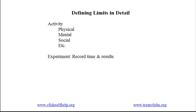Giving yourself a rating, as described in the last video, provides you with an overall sense of your limits — we call that the big envelope. But you can go a step beyond that by establishing limits in detail, which we call the little envelopes, by focusing in turn on different types of activity using a technique described here.